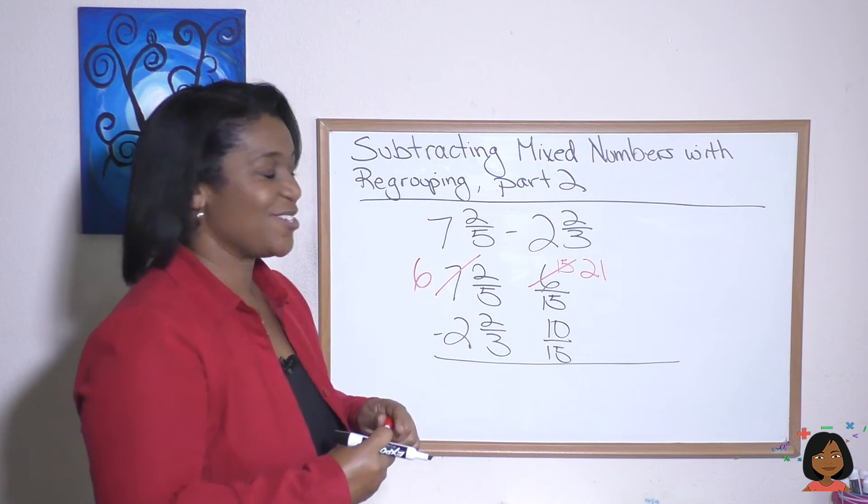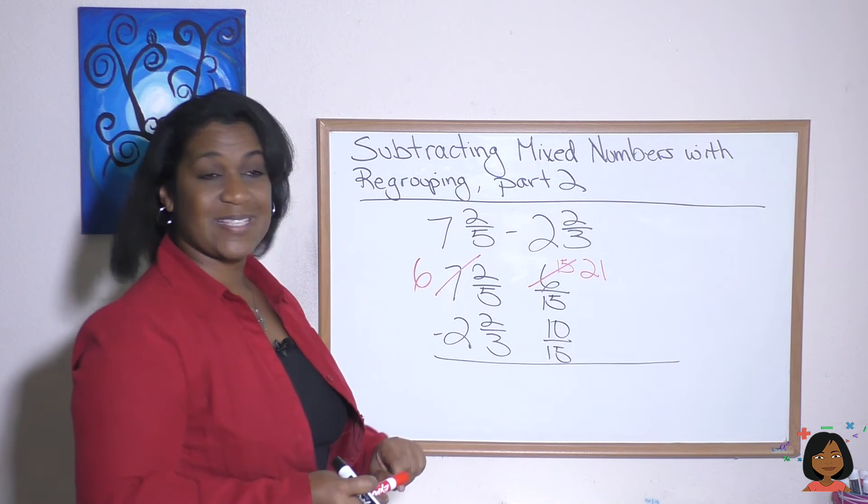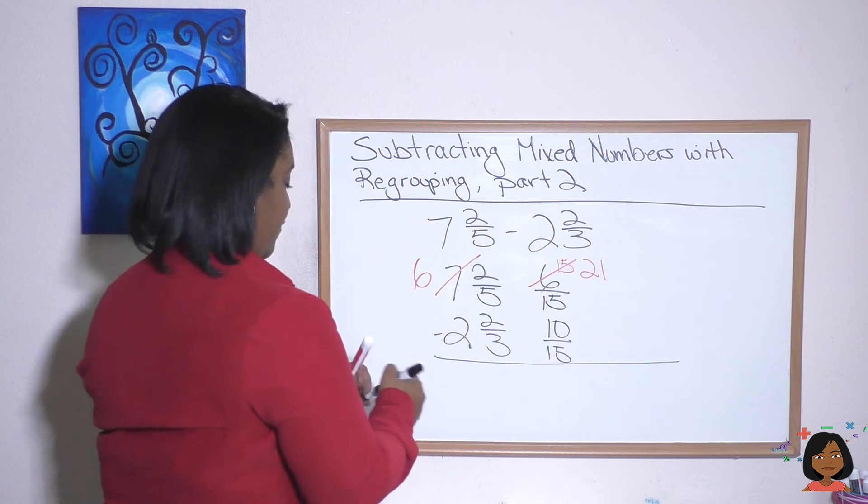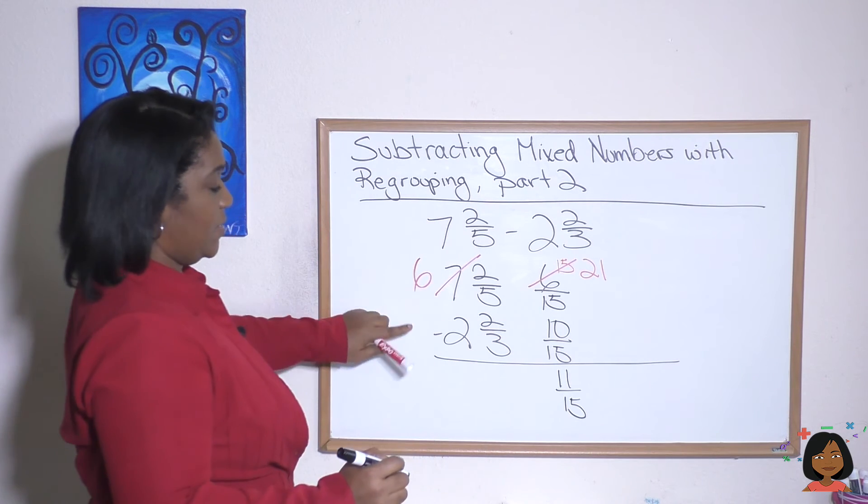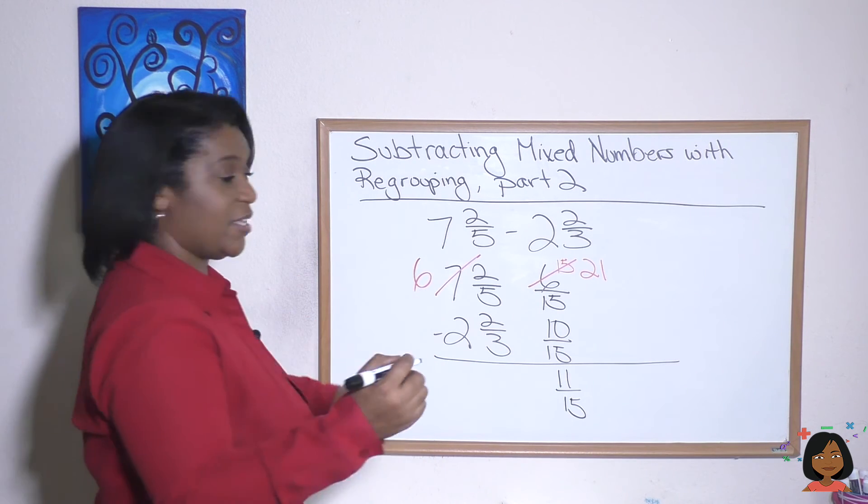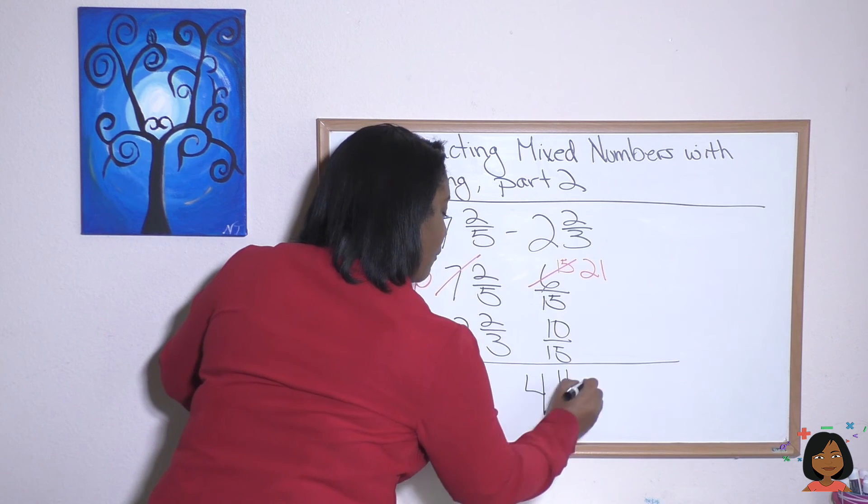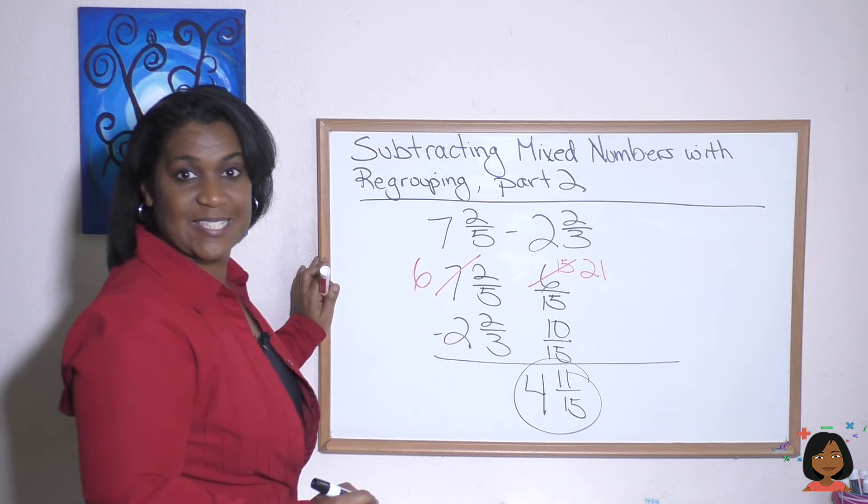Now I can do my subtraction. 21 minus 10 is 11 fifteenths. And six minus two is four. My answer, four and 11 fifteenths.